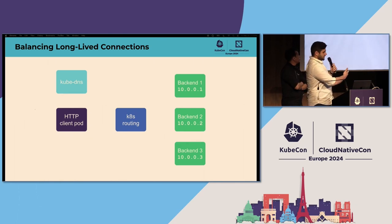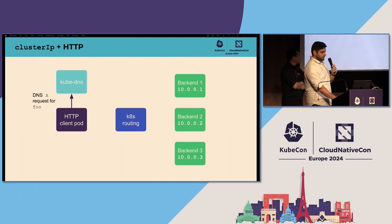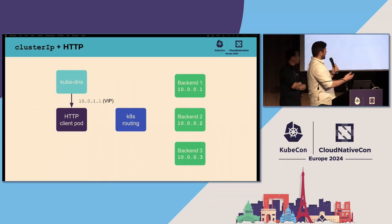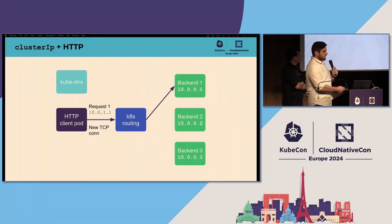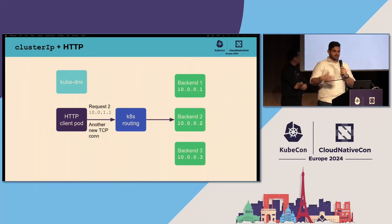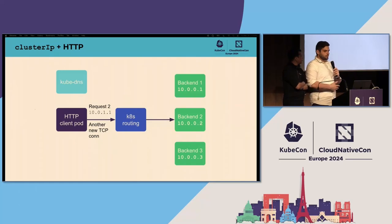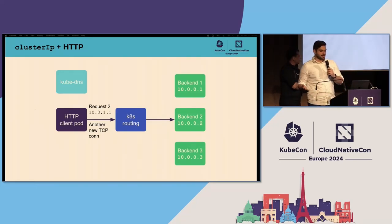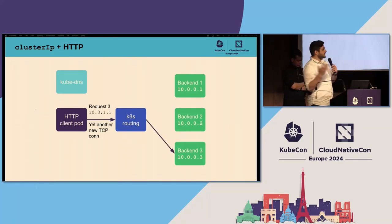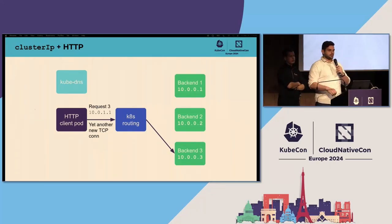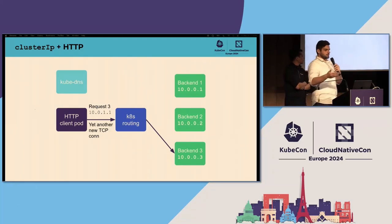We've got a basic setup: one HTTP client configured to send requests to a service named foo. The client starts its first request, sends a DNS request for foo, KubeDNS gives back the virtual IP 10.1.1, the client establishes a new TCP connection, Kubernetes balances it to one of the backends, and backend one returns the result. For the second request, the HTTP client will almost certainly initiate a new TCP connection and Kubernetes will ensure it goes to a different backend — we've already seen a spread. For the third request, same story: yet another new TCP connection, yet another chance at hitting a different backend. This is how the vast majority of HTTP traffic in Kubernetes works. What happens when you drop a gRPC client into this picture instead?